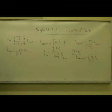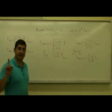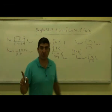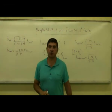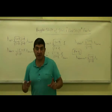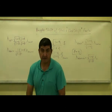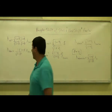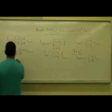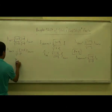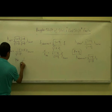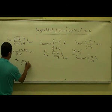We can further rearrange by multiplying both sides appropriately to get: lambda observer equals (1 plus beta) over square root of (1 minus beta squared), times lambda source. The factor 1 over square root of (1 minus beta squared) is the relativistic factor gamma from special relativity. Gamma is defined as 1 over square root of (1 minus beta squared).